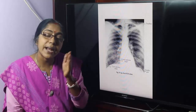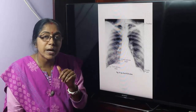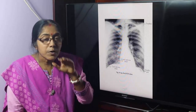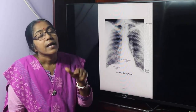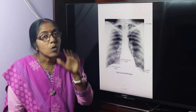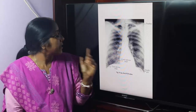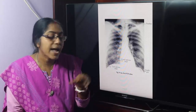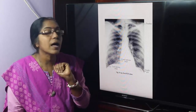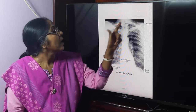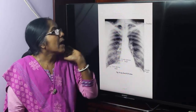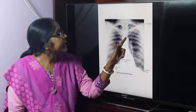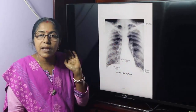We have to ask questions. Why is the right dome higher? The right dome is elevated because of the right lobe of the liver. The right dome is slightly higher than that of the left dome. This is the tracheal shadow.